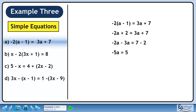Simplifying gives minus 5a equals 5. Divide both sides by minus 5 to isolate a. Our answer is a equals minus 1.